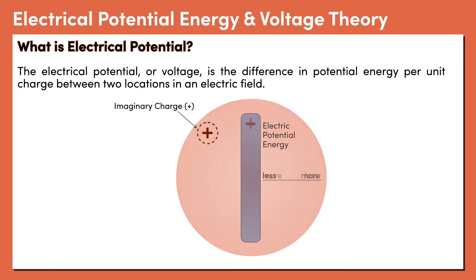What if our plate was positively charged? A positively charged particle would be pushed away from the plate. This is the exact opposite of the last case. Near the plate the electrical potential is high, and far from the plate the electrical potential is low.